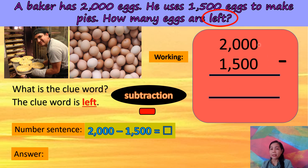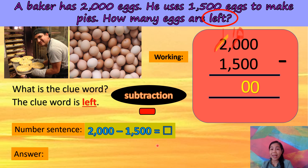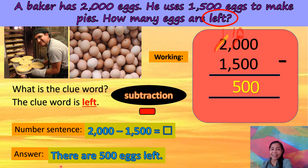Let's subtract. 0 minus 0 equals 0. 0 minus 0 equals 0. 0 minus 5 cannot be, so regroup or borrow 1 from 2. 2 becomes 1 and 0 becomes 10. 10 minus 5 equals 5. 1 minus 1 equals 0 — you don't need to write it. There are 500 eggs left.